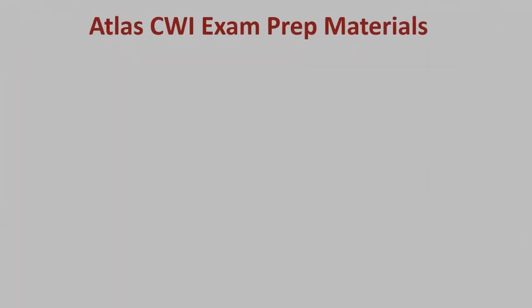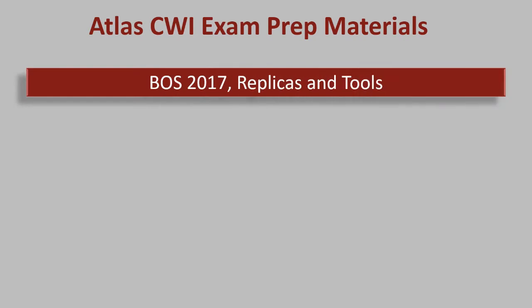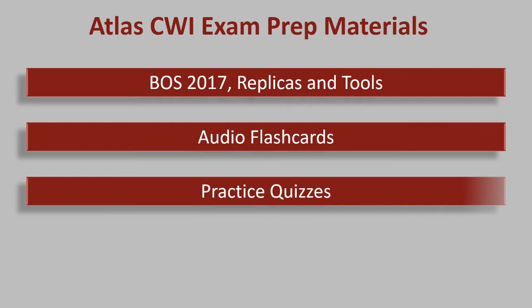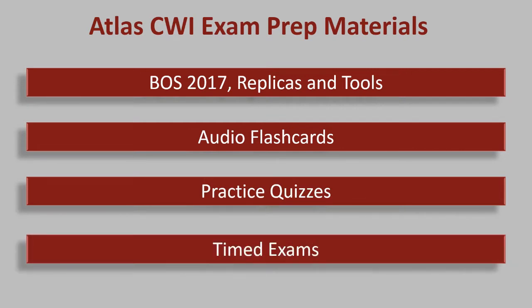The Part B exam prep materials consist of four different sets of study materials: the first is the book of specifications, replicas, and tools; audio flashcards; practice quizzes; and timed exams.